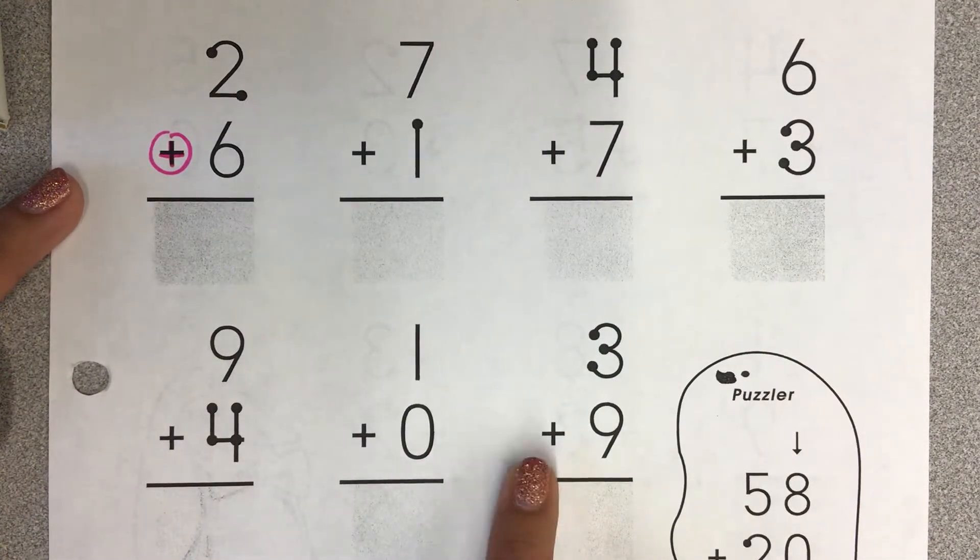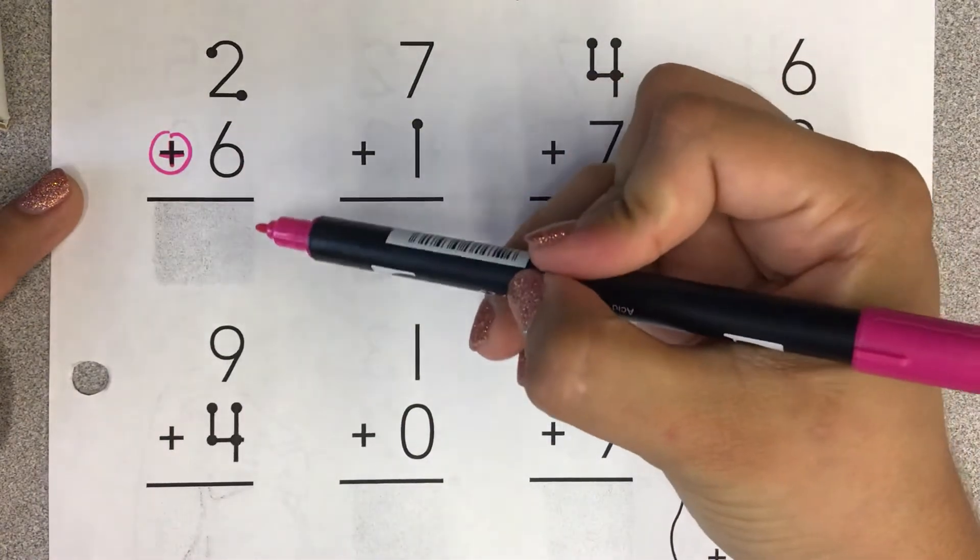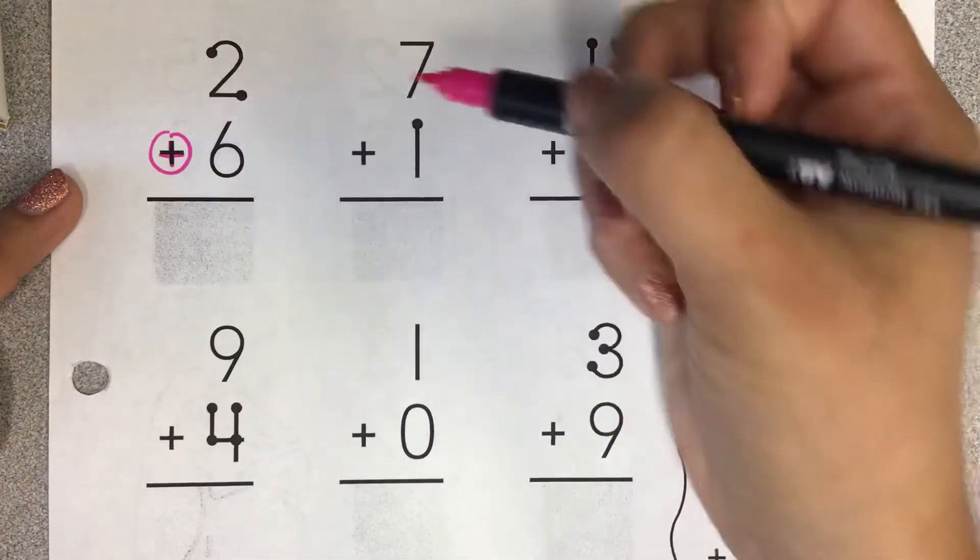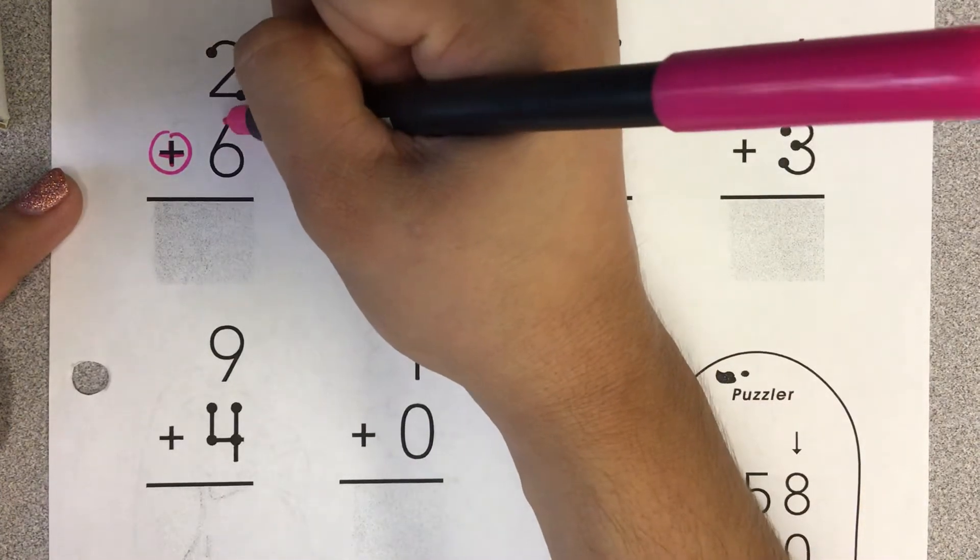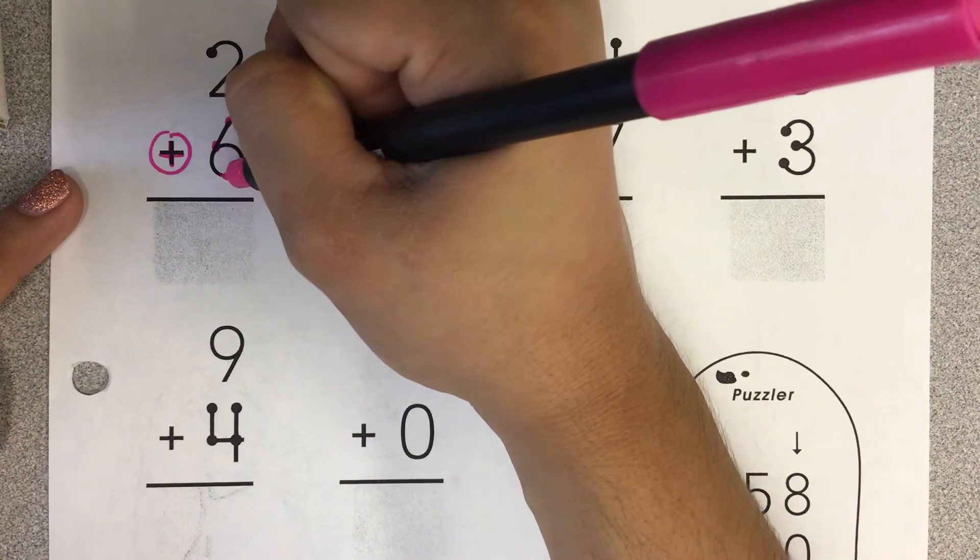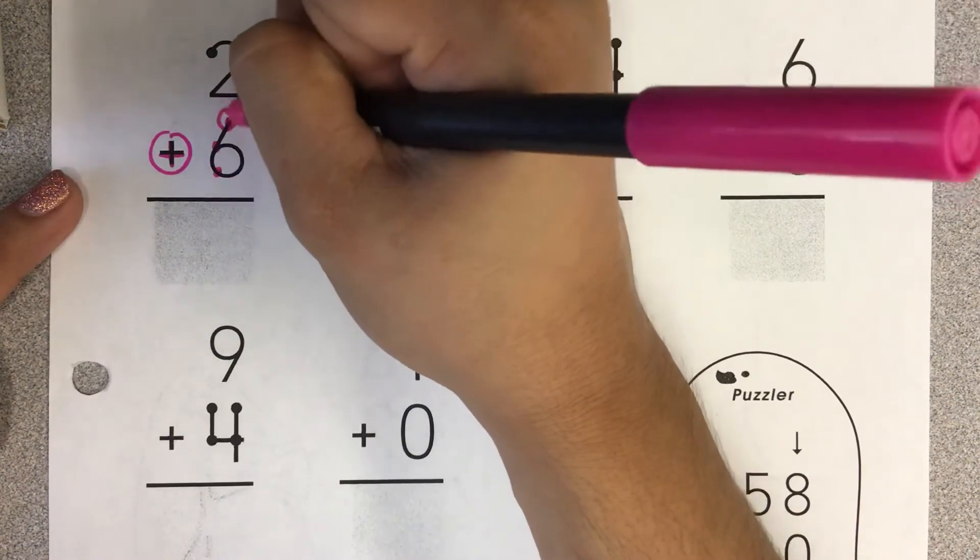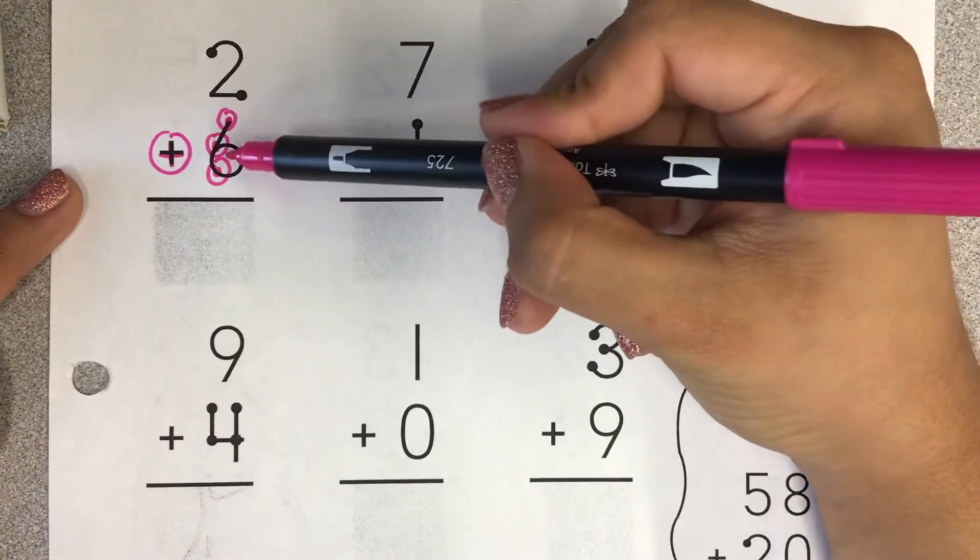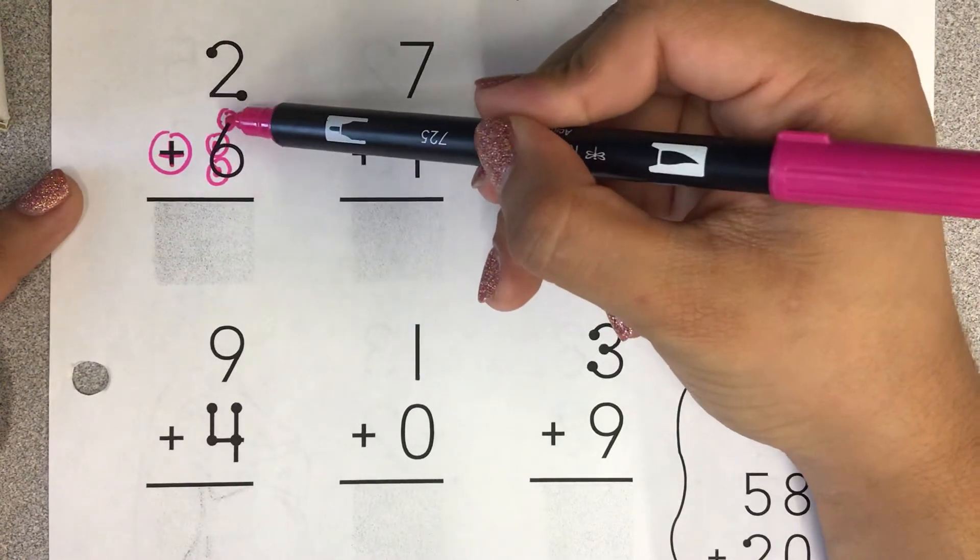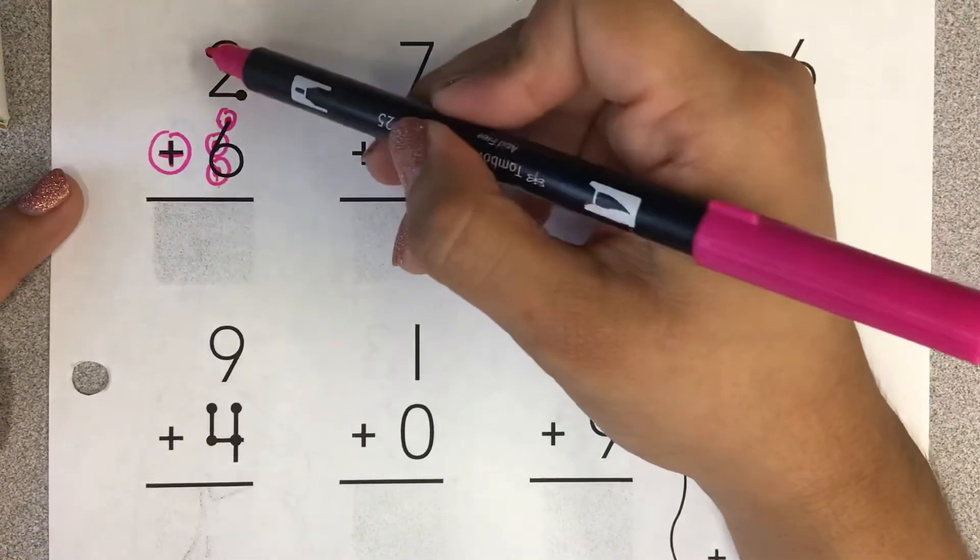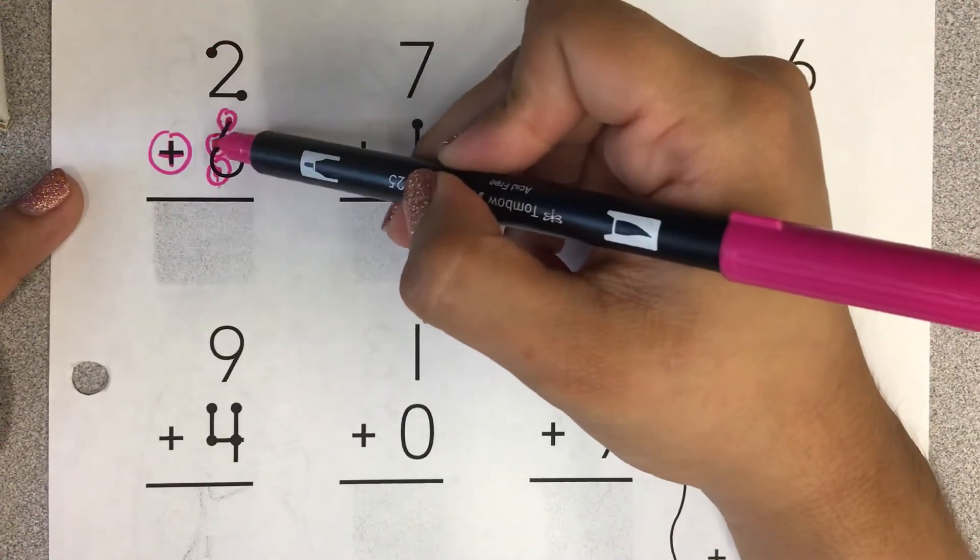But you'll notice only one number has touch points. So I want you to practice adding your touch points to your problems. So I went ahead and added my 6 touch points, 3 dots and 3 rings, to my 6. And then I will just count for the total.